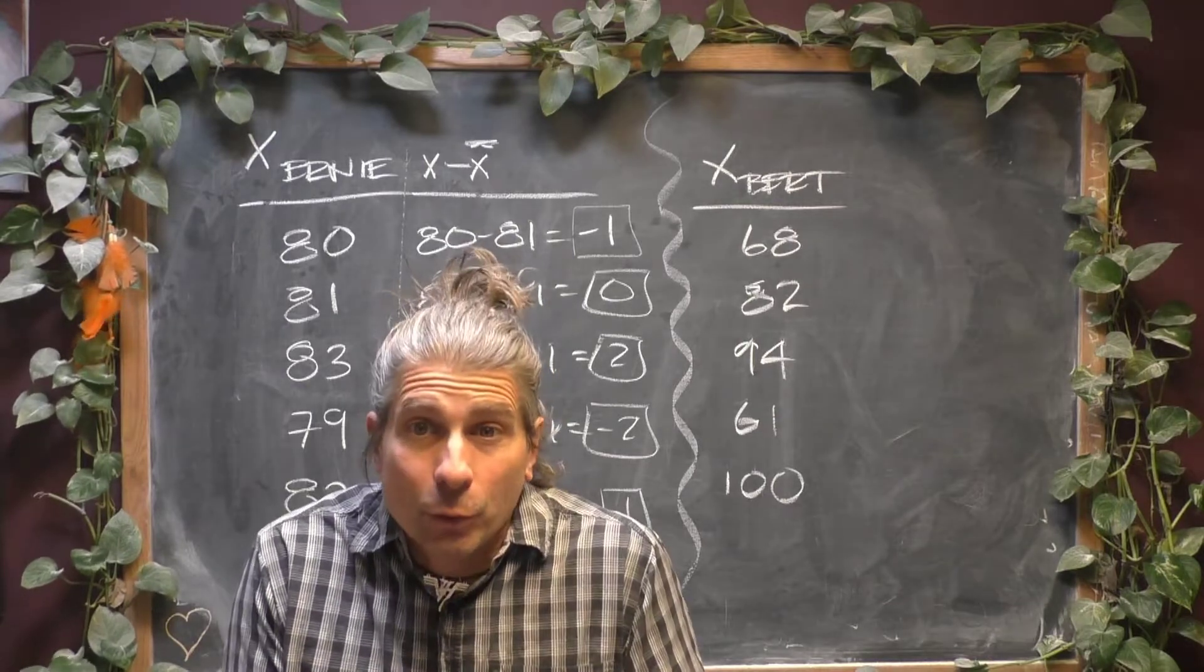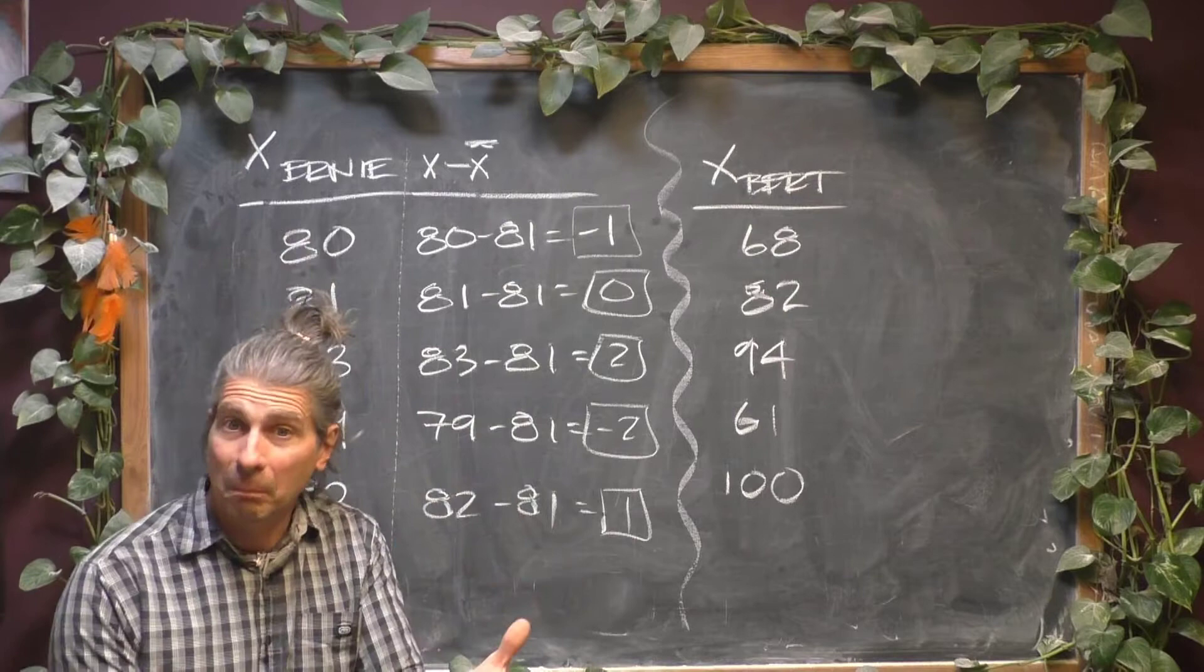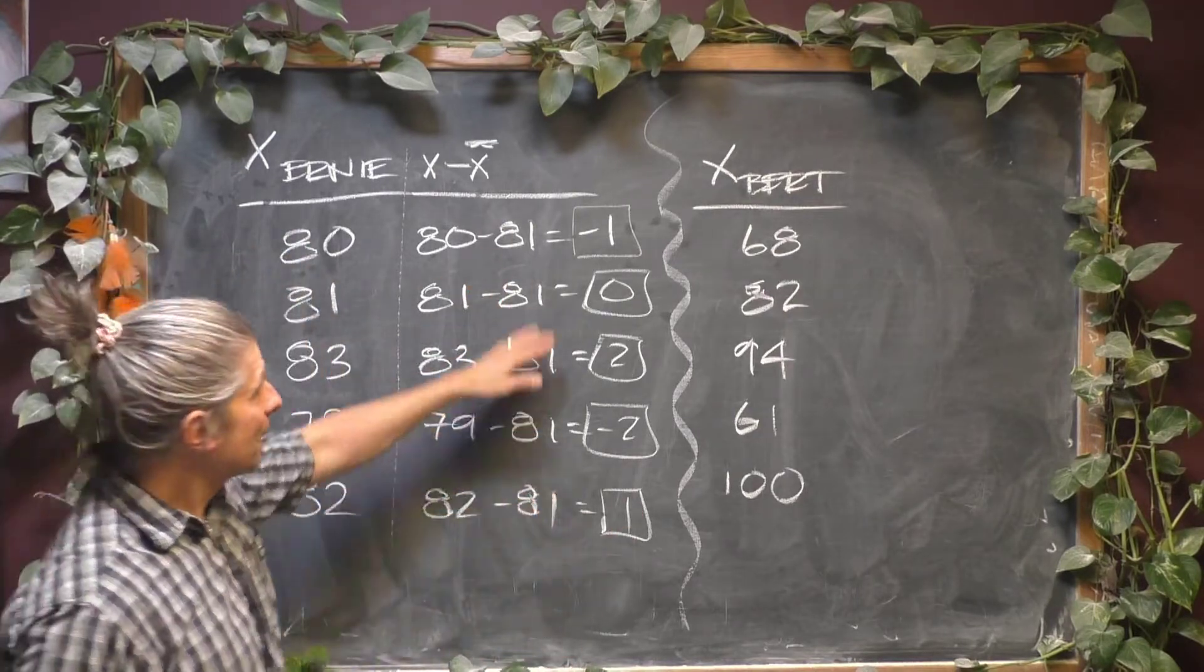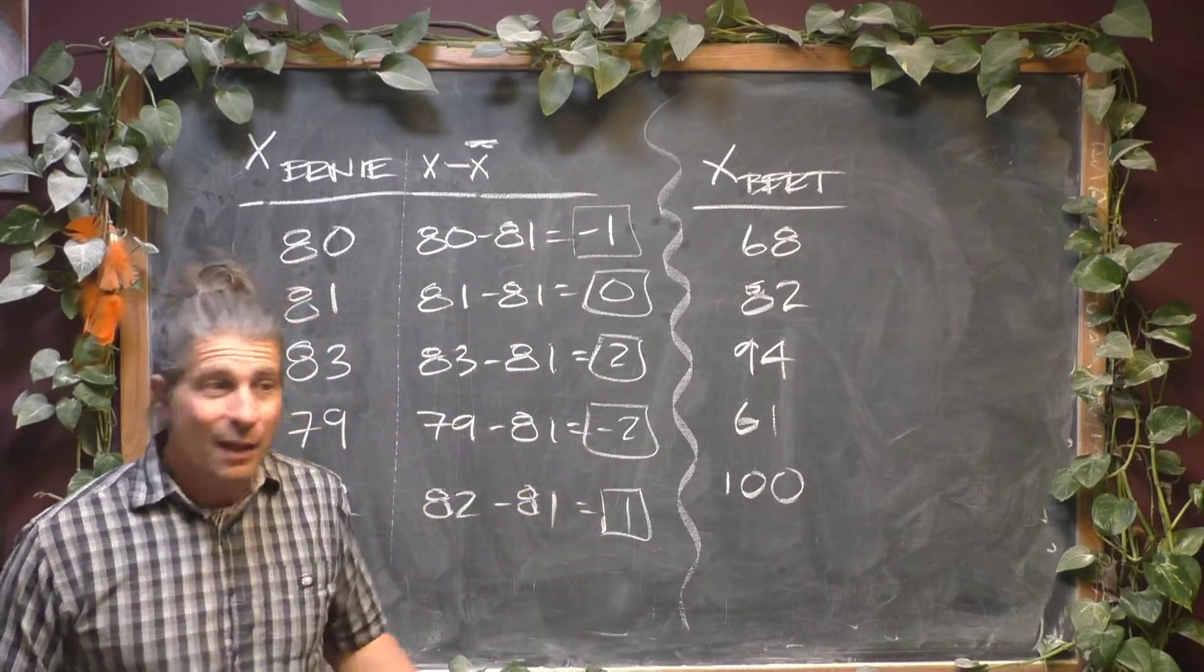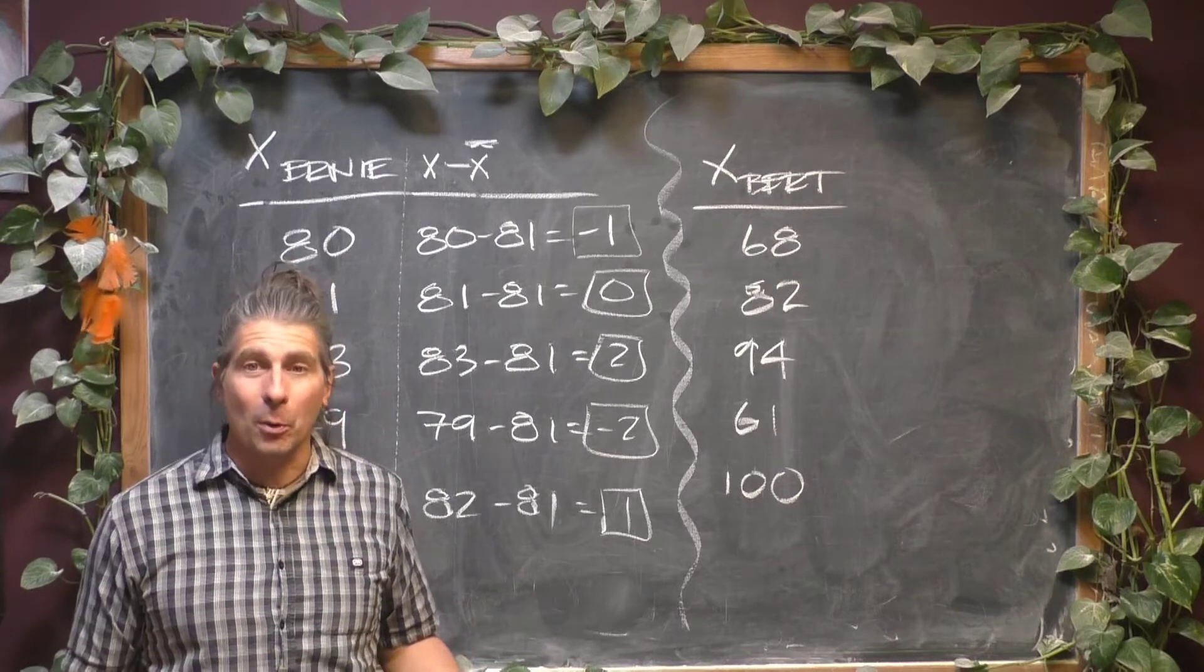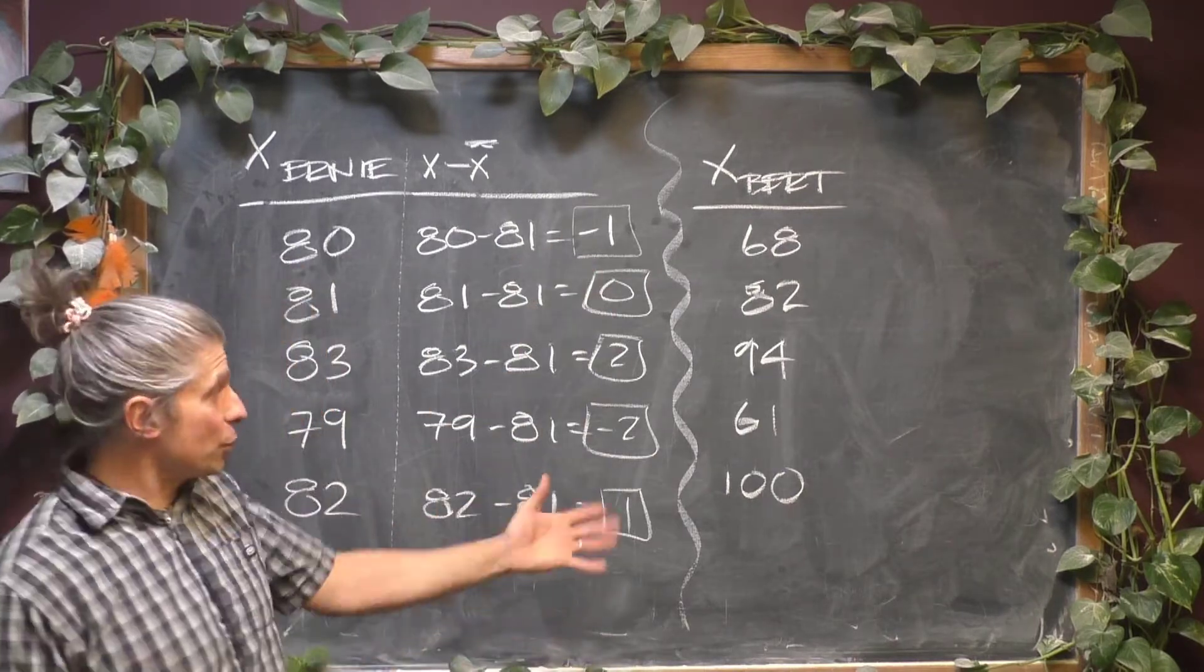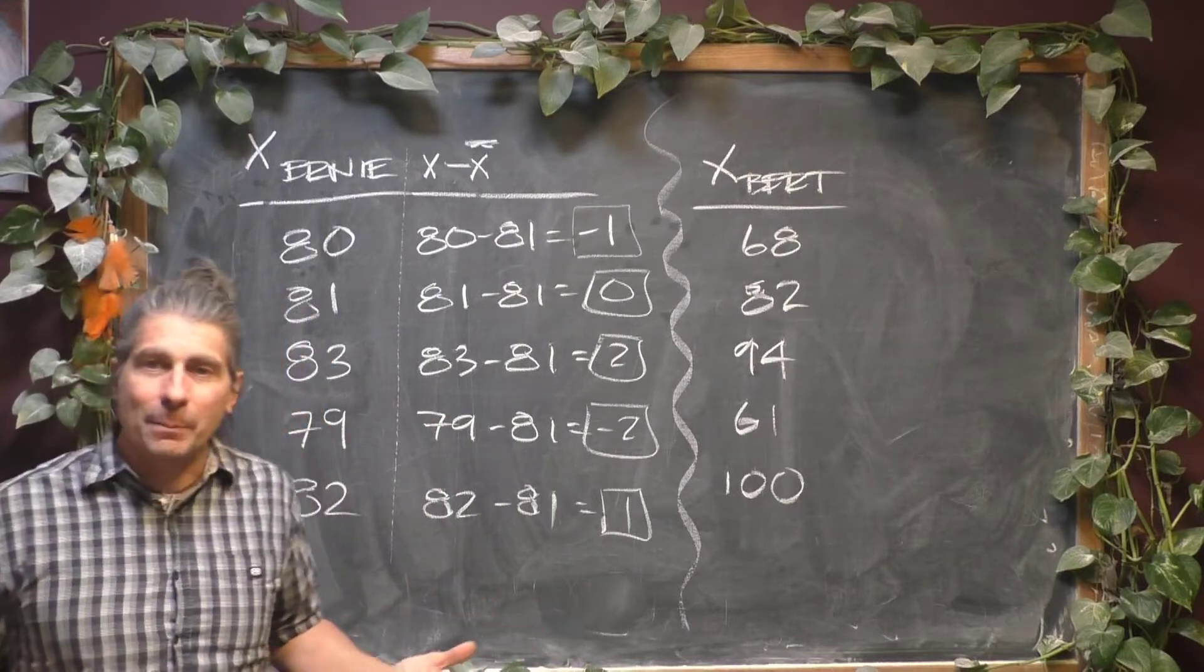So one thing you might want to do like we did with center is average these and the only problem with that is if you try to average these, look what happens. Negative 1 plus 0 plus 2 plus negative 2 plus 1. If you add that up, it adds up to 0. And 0 divided by 5 is 0 which means if you use these numbers, your average deviation from the mean is going to be nothing.